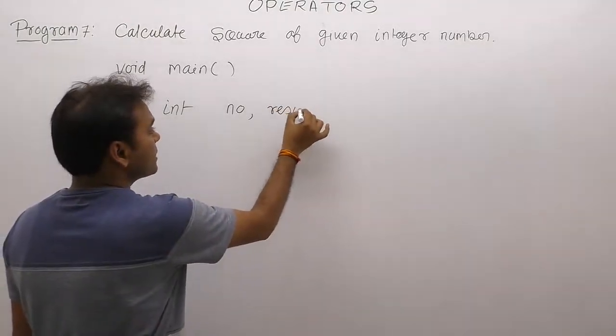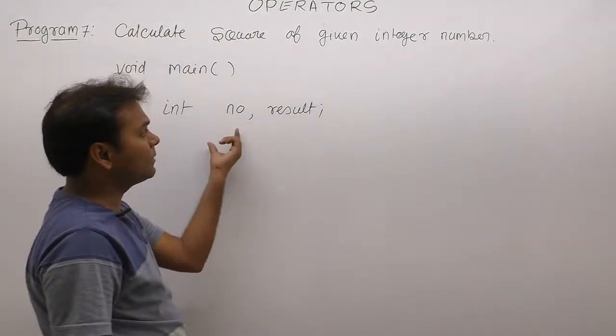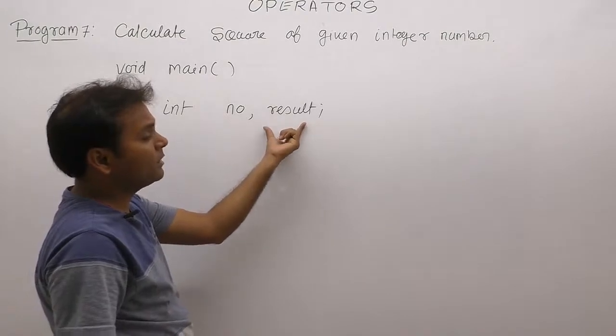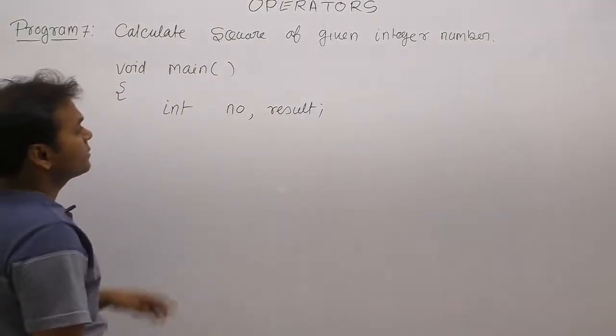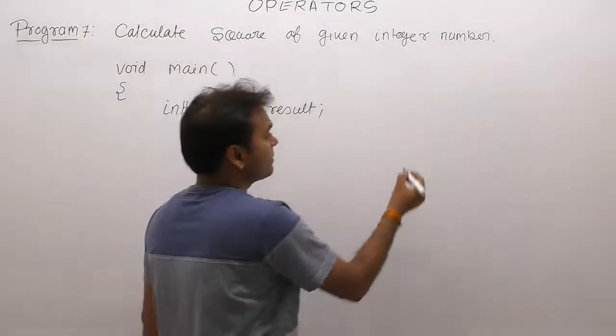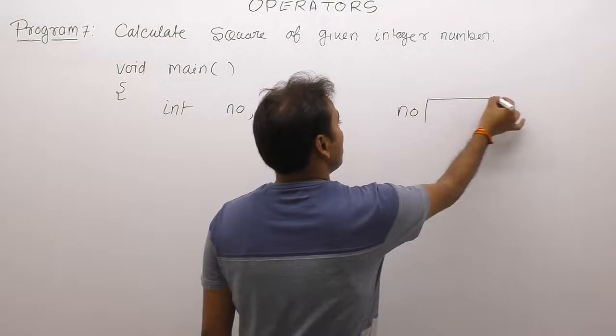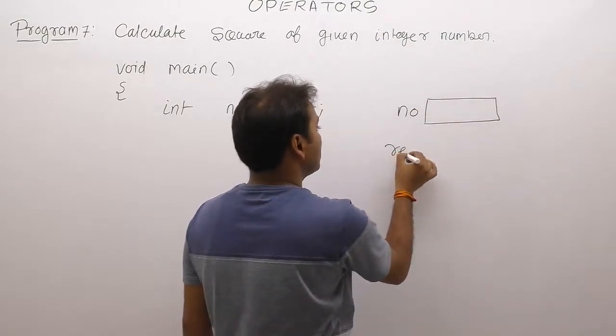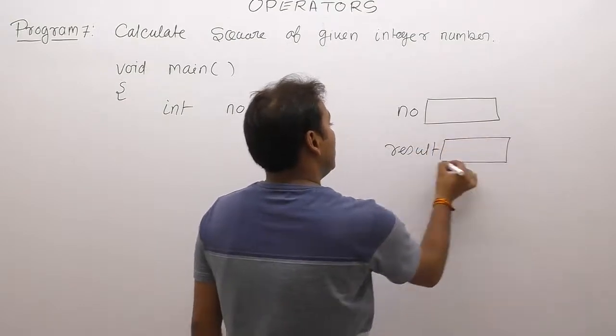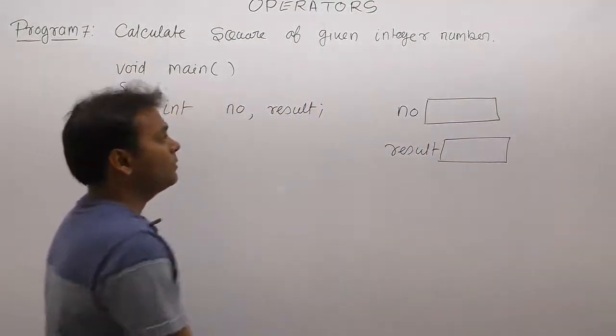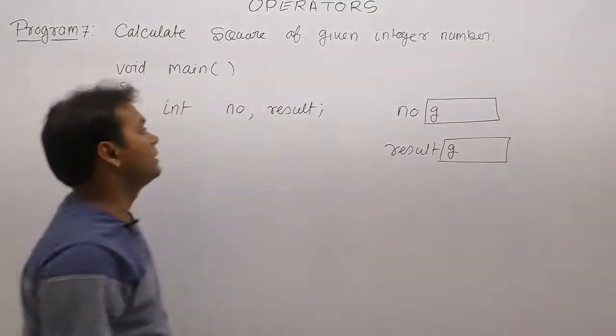Subsequently memory is allocated for two variables called as number in the form of stack. Number and result, initial value of number and result is garbage.